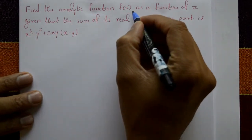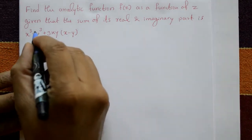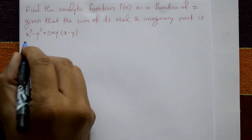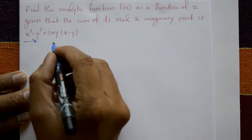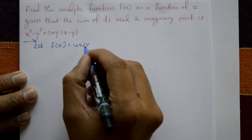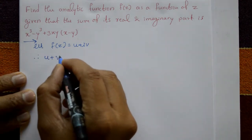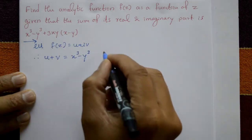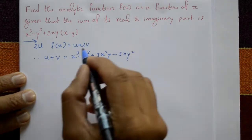Find the analytic function f(z) given that the sum of its real and imaginary parts is x³ - y³ + 3x²y - 3xy². Let f(z) = u + iv, where u and v are the real and imaginary parts. The sum u + v is given as x³ - y³ + 3x²y - 3xy².